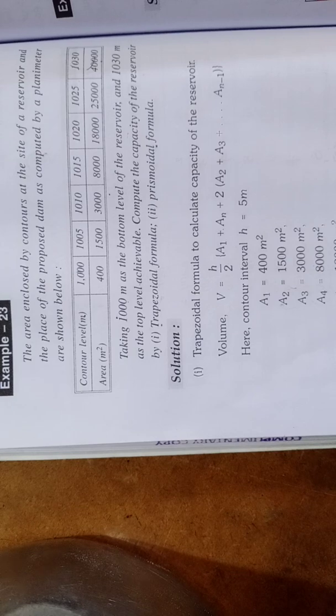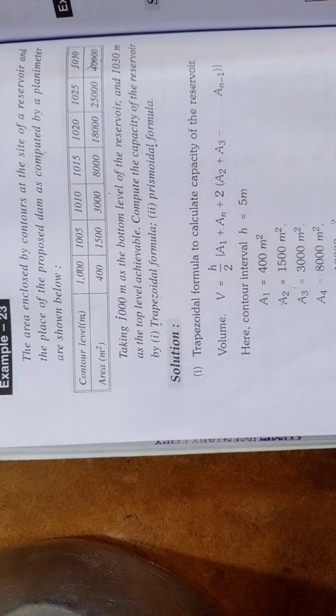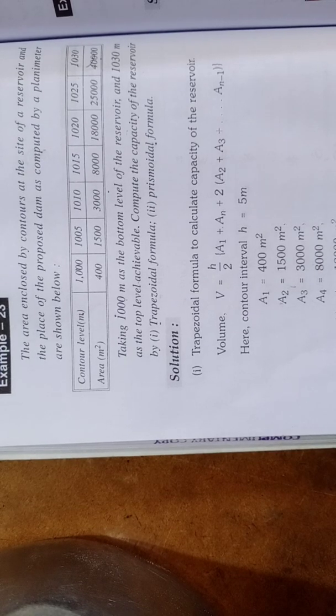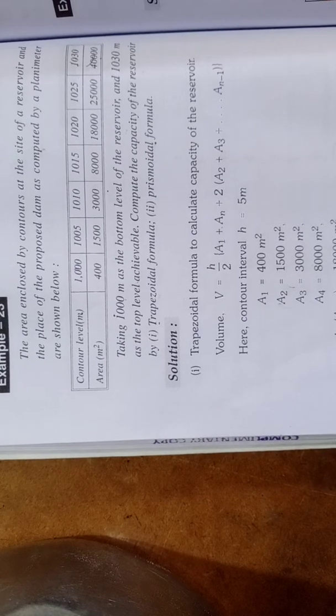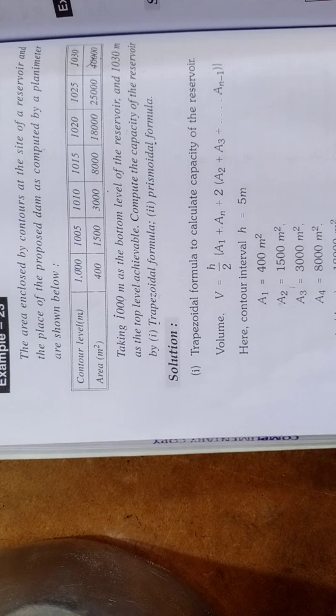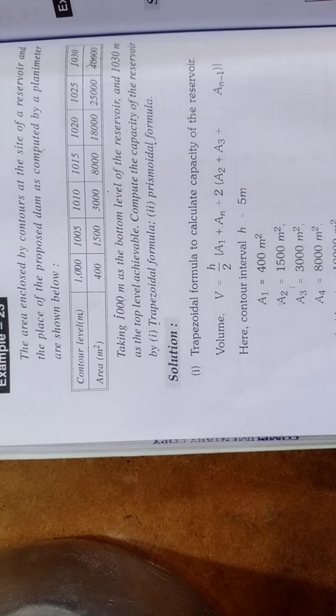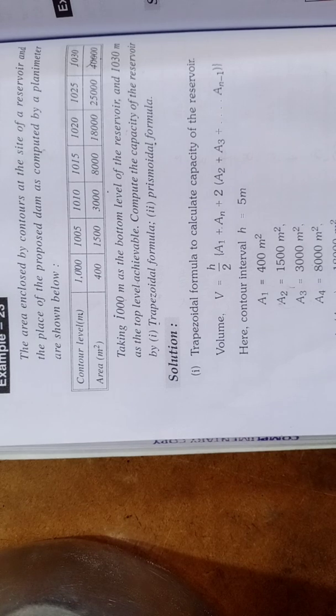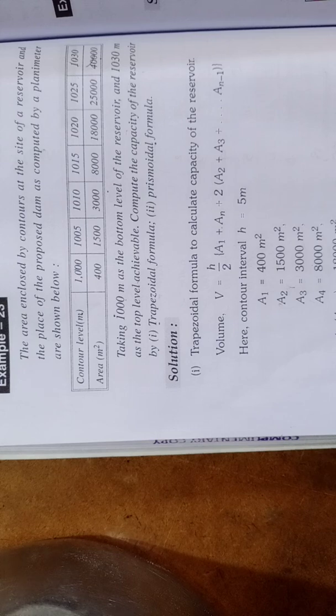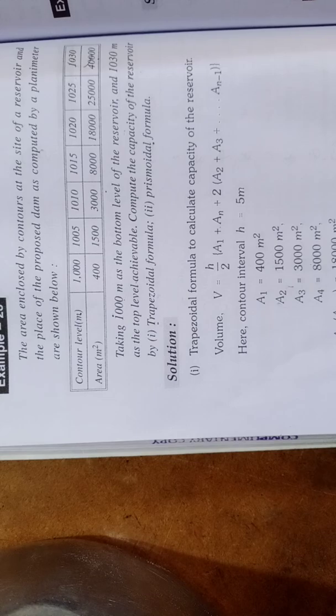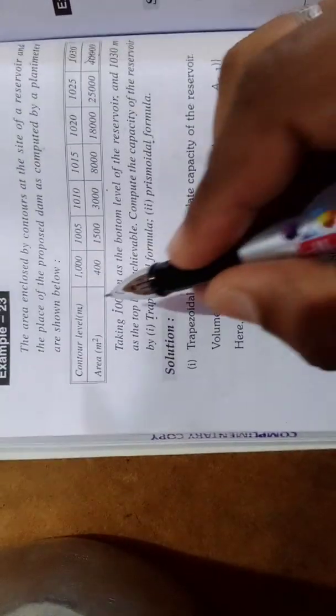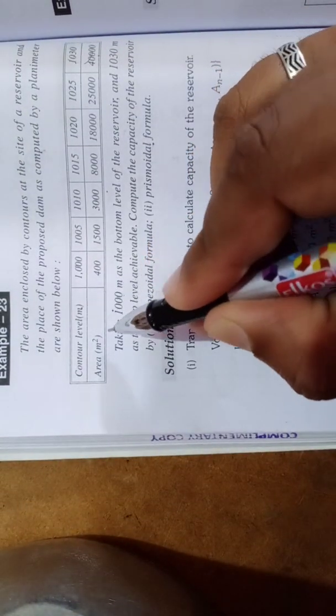Based on these formulas, we'll solve one problem. Here is an example: the area enclosed by contours at the site of a reservoir and the place of the proposed dam as computed by a planimeter. The planimeter is an instrument which can be used to calculate the area from the map.